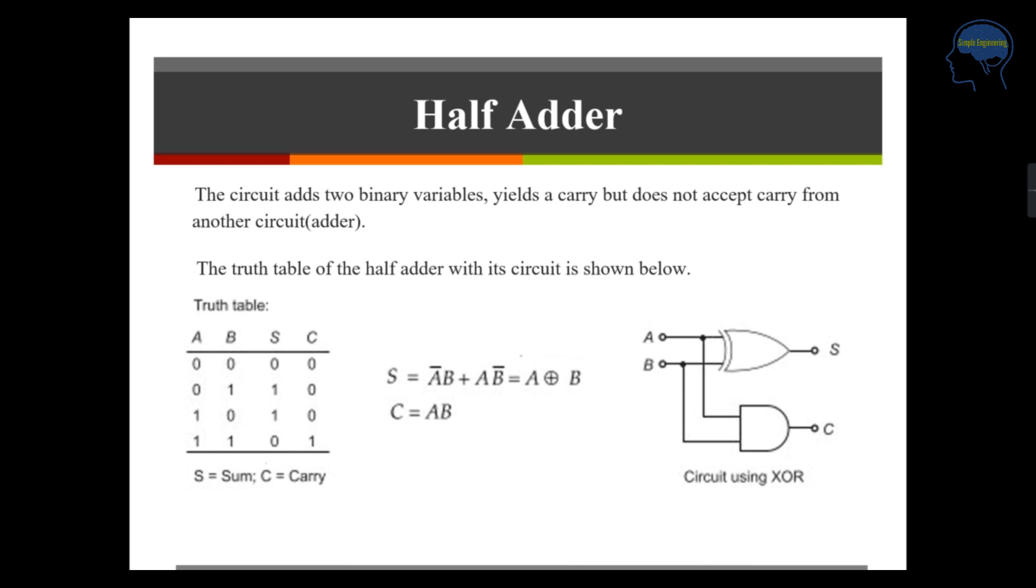In half adder, the circuit will add 2 binary variables but it does not accept carry from any other adder circuit. This is the truth table of your half adder and you can see that 0 plus 0, S is your sum and C is your carry.